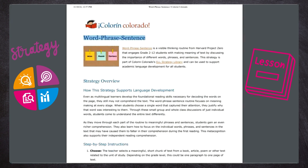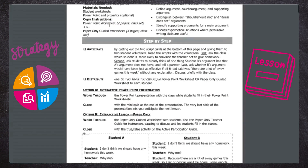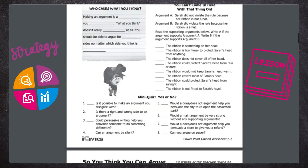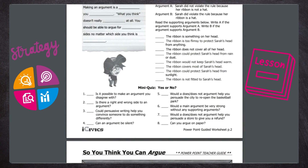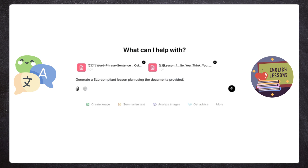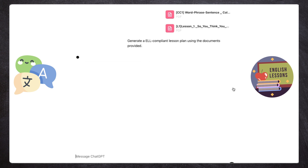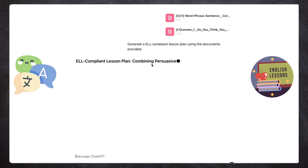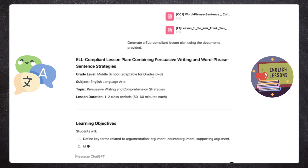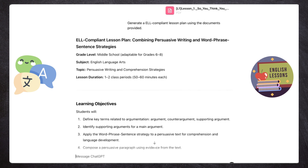The other document I'm uploading is a pre-prepared lesson plan. What I'm going to ask the model to do is conform the lesson plan to the ELL strategy I'm providing it, and show how we can use prompt engineering to produce an incrementally better artifact. So I'm starting with a simple prompt: just generate an ELL-compliant lesson plan using the documents provided.